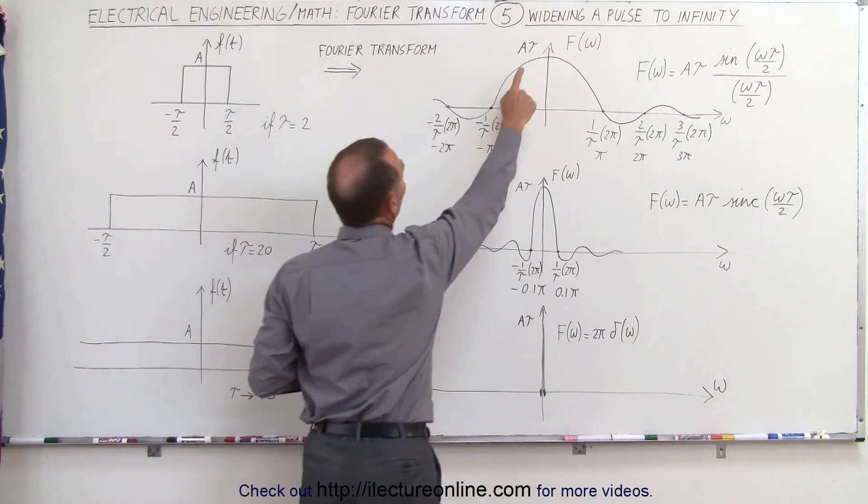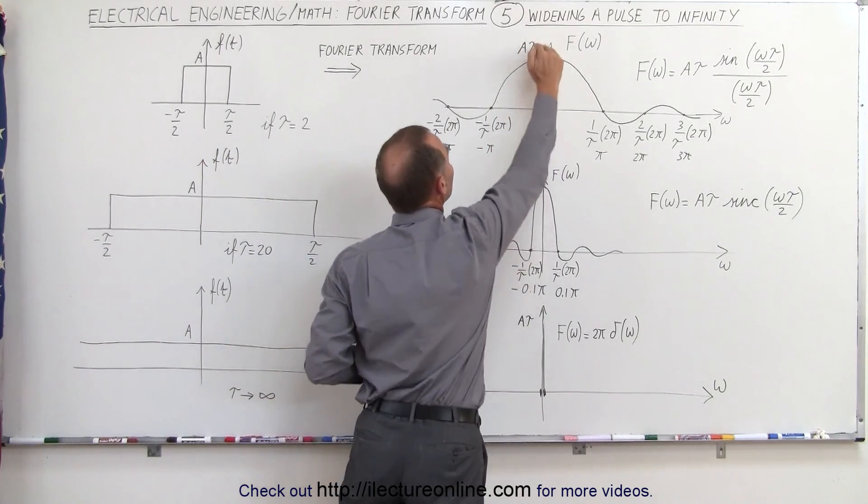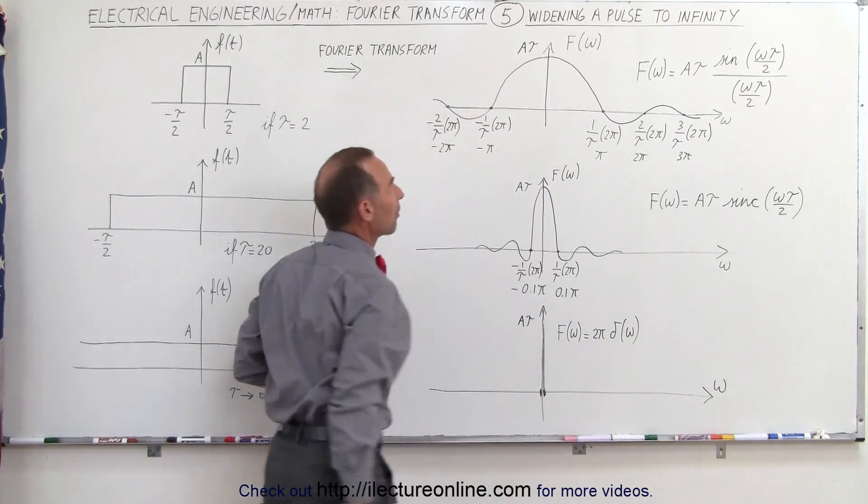Notice that the larger or wider the pulse becomes, the larger tau becomes, and the higher the amplitude when we do the Fourier transform.